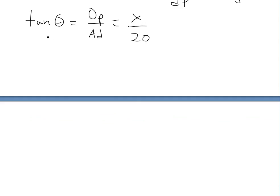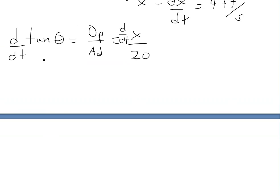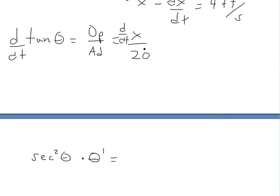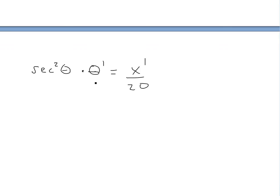So if we take the derivative of both sides, we get d/dt of tan θ on the left side and d/dt of x/20 on the right. The derivative of tan is secant squared theta, and by chain rule we multiply by theta prime. On the right side, the derivative of x over 20 is just x prime over 20, because the derivative of x by chain rule gives x prime. So we have sec²θ · θ' = x'/20.